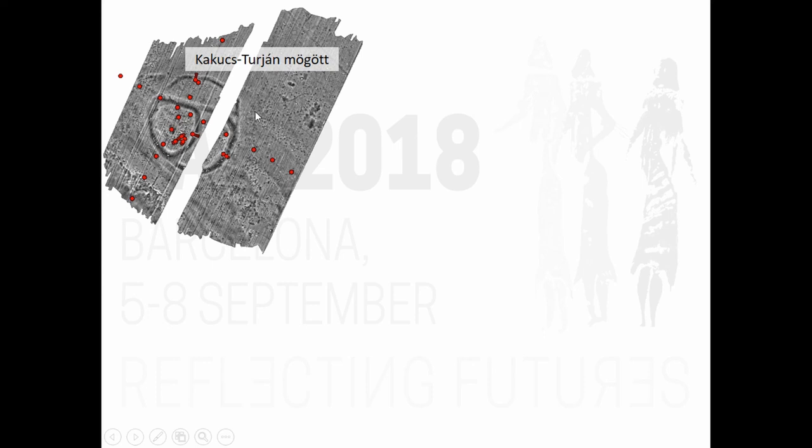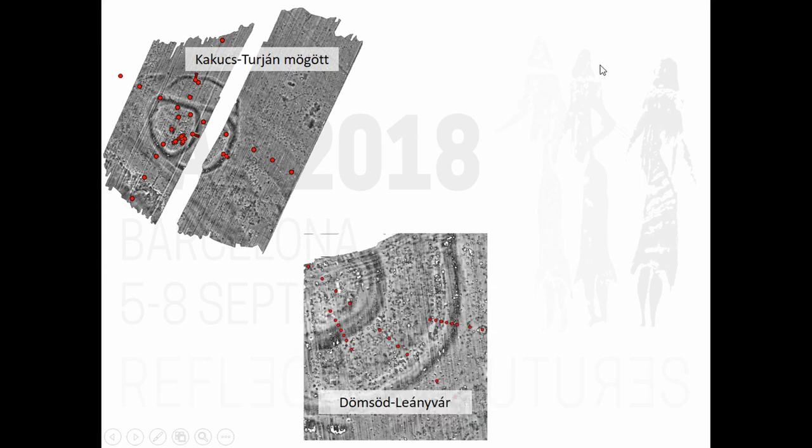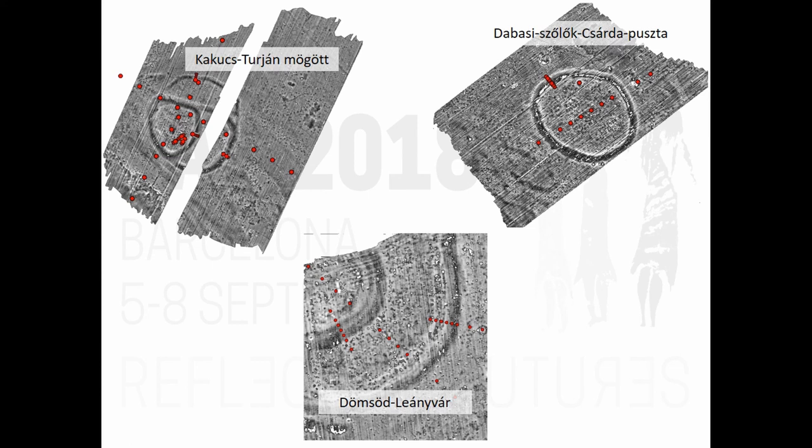Then we have two other sites which look more or less similar in terms of structure. At Dömsöd we have again ditches and more clusters, but we don't see the entire site because it's eroded at the moment. Then we have a very simple site with only one nucleus, the Dabas-Selpuszta site. This ongoing research is focusing now on if they are similar only in the horizontal way, or also their vertical structure and the distribution of the different layers is similar or not.